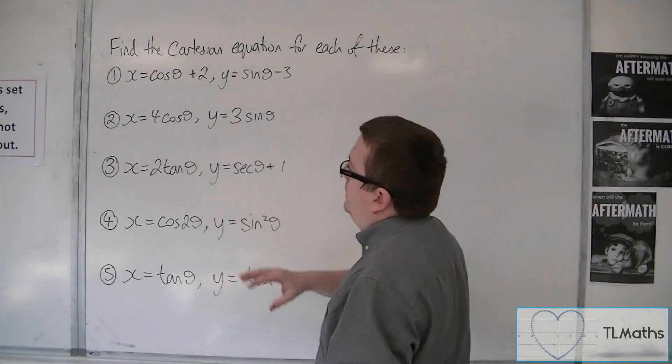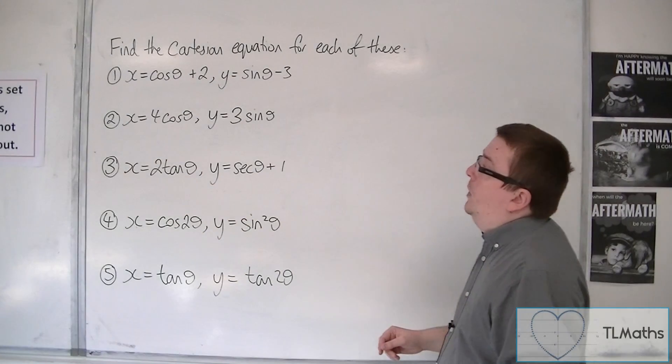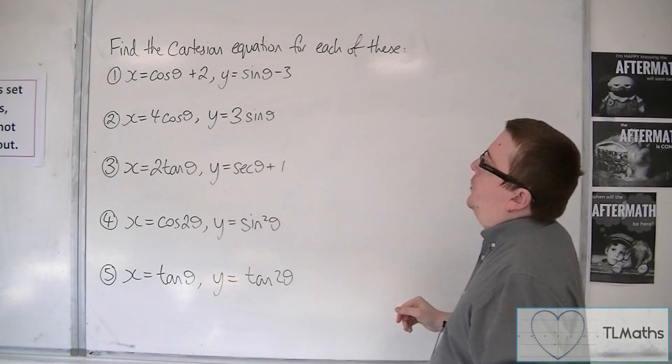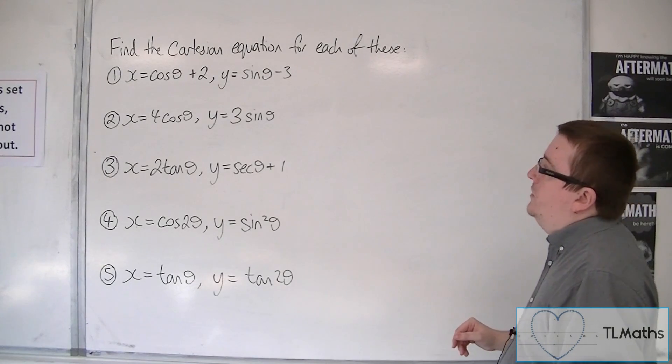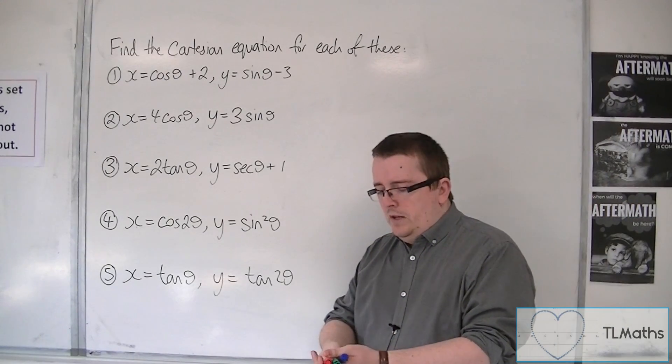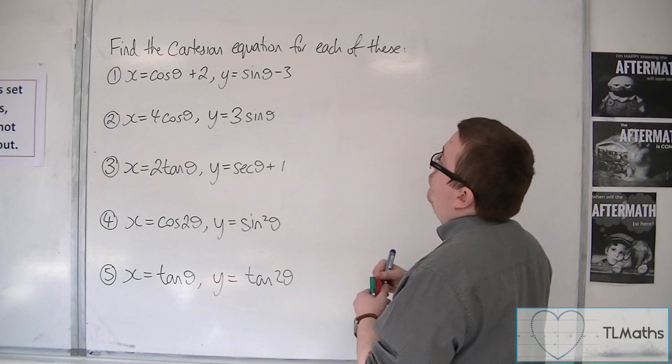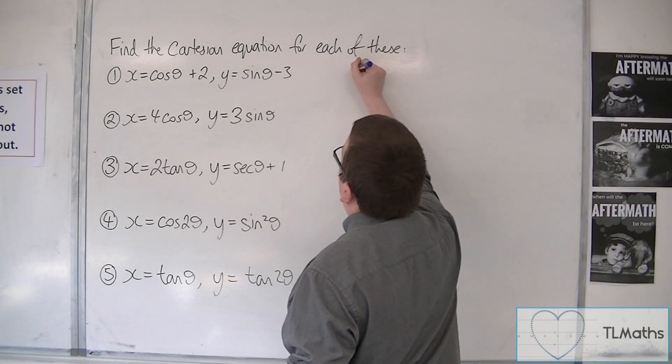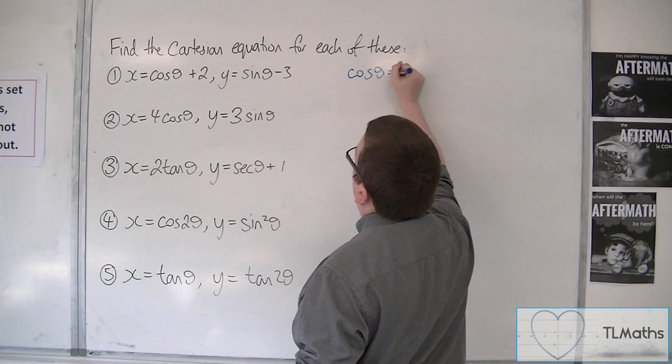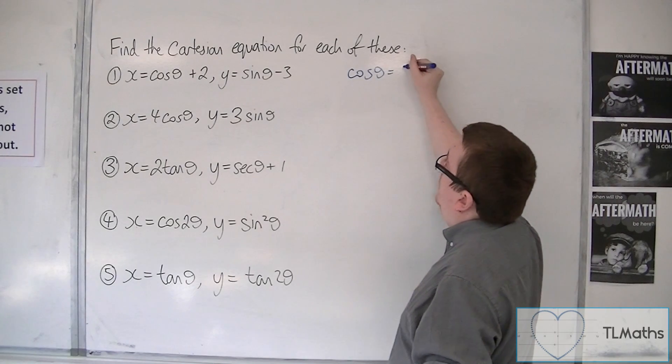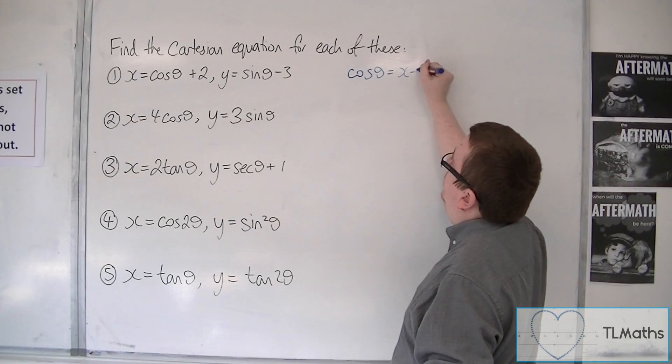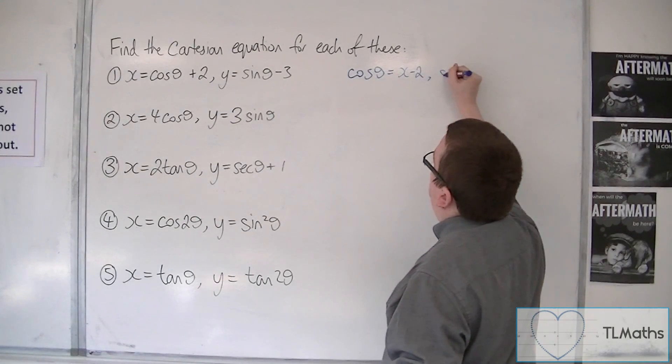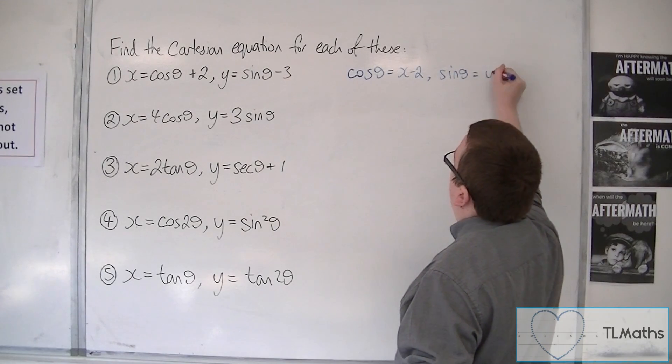In the majority of cases, they're going to work in a very similar way. If we start with the first one, x equals cos theta plus 2 and y equals sin theta minus 3, what we could do is rearrange both of these to get cos theta and sin theta equals. So cos theta would be x minus 2, and sin theta would be equal to y plus 3.